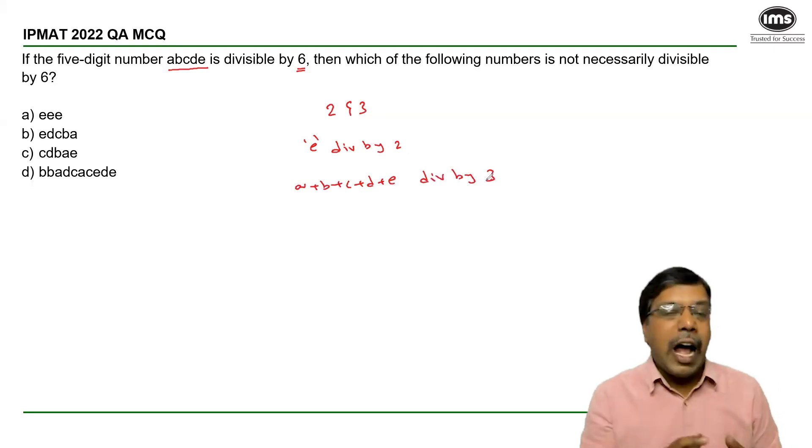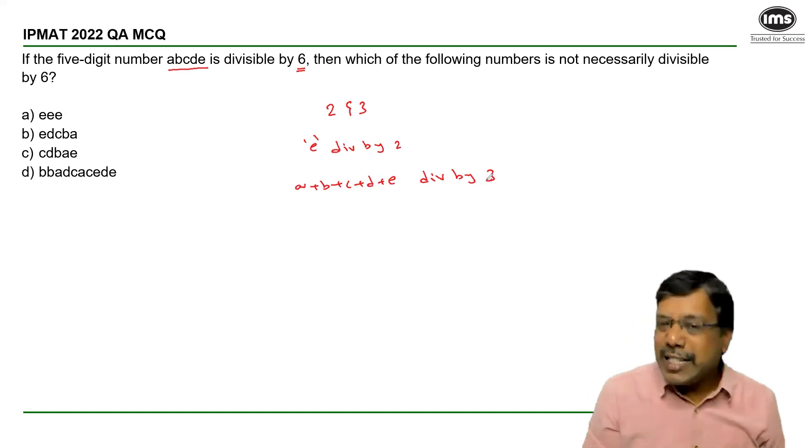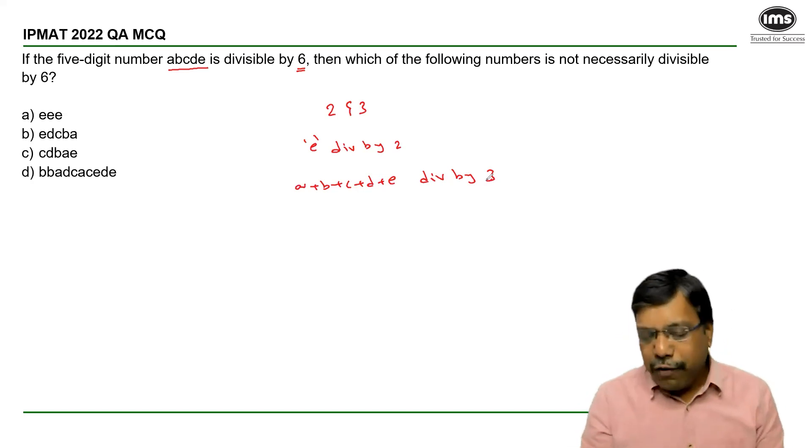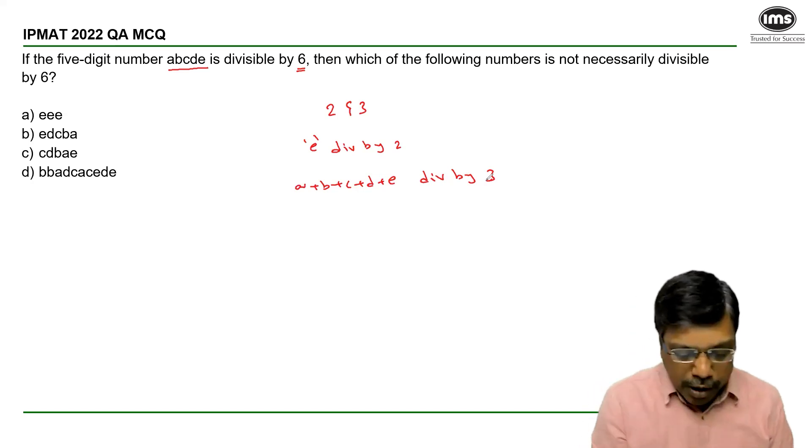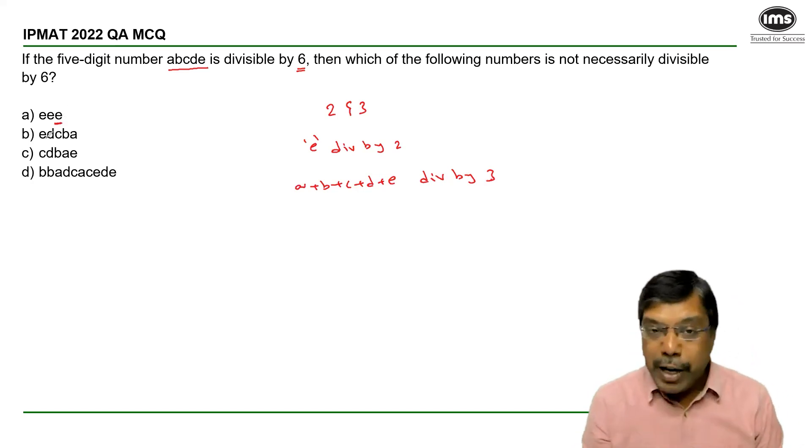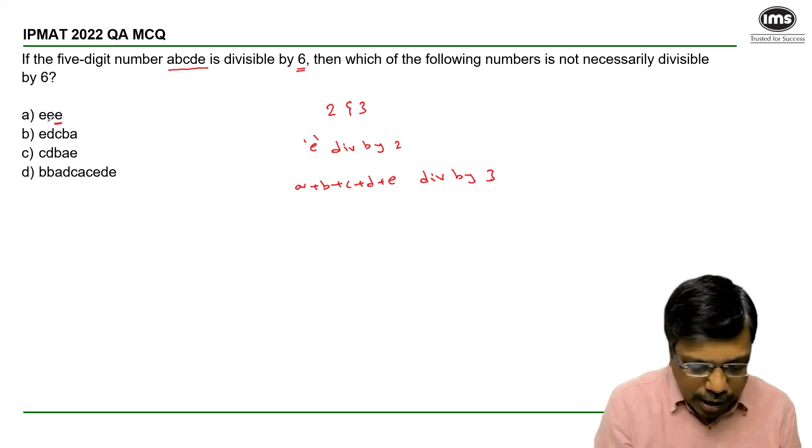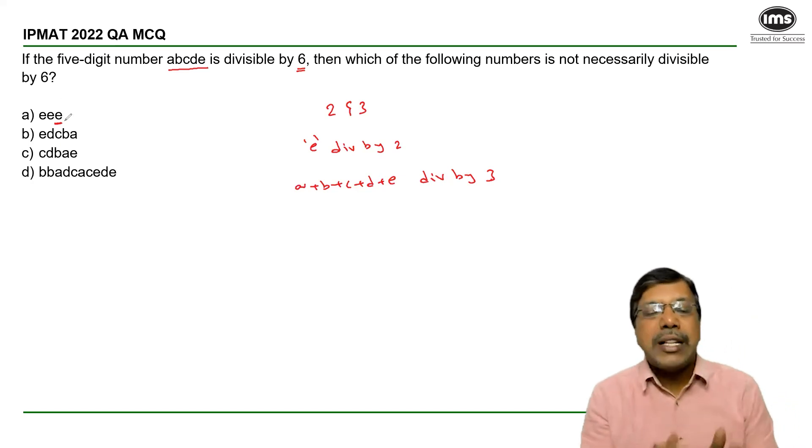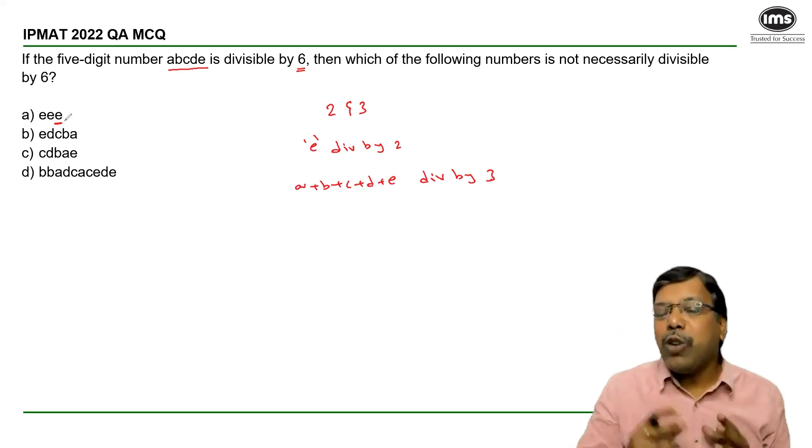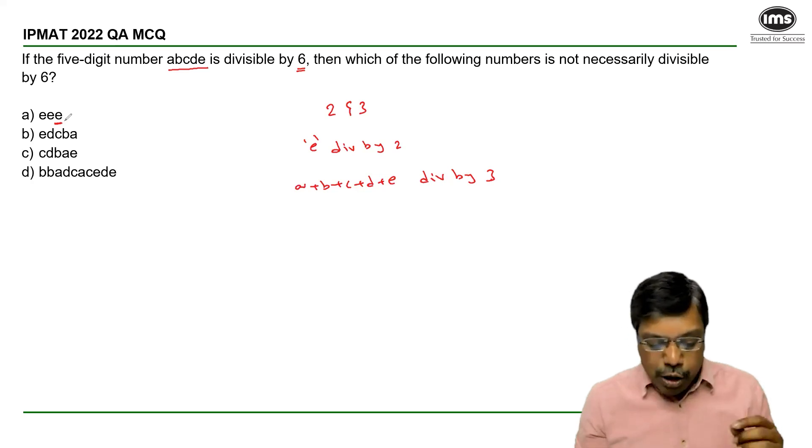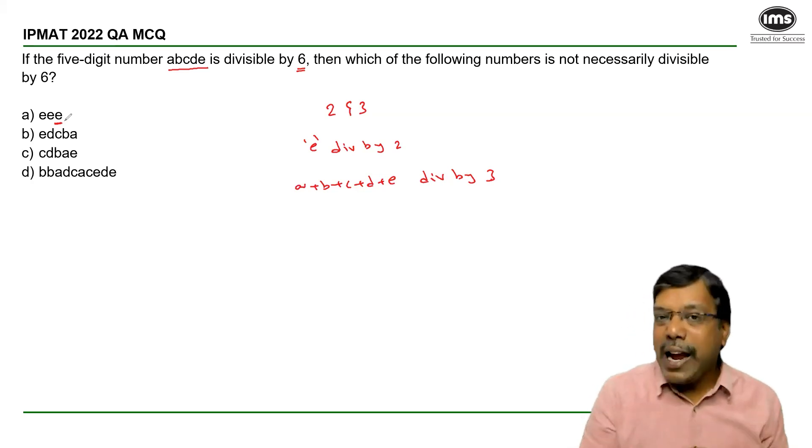We need to find the answer option which is not necessarily divisible by 6. The first option when I see the unit's digit is E. So it is divisible by 2 and the sum of the digits is E plus E plus E, 3 into E irrespective of the value of E. So the first one is divisible by 6.